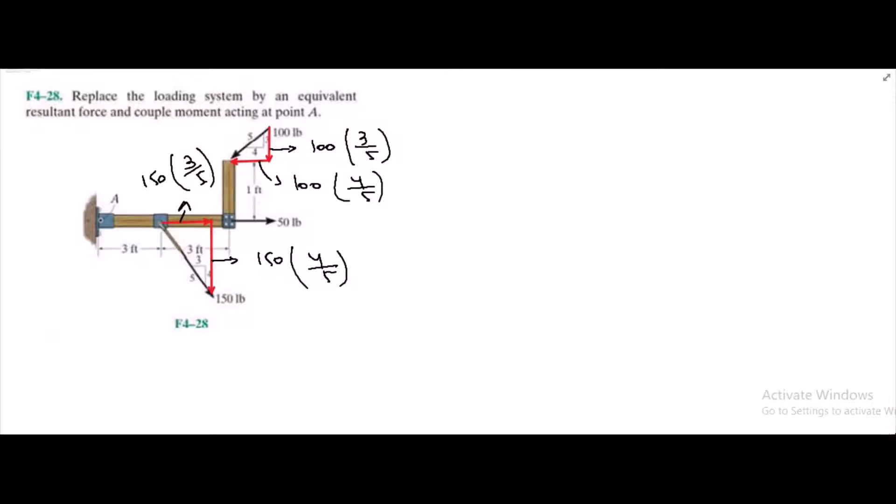For the resultant force, we have to sum up the forces in the x direction, which are equal to, if we consider right-hand side as positive, then we have negative 100 times 4 over 5, positive 50, and positive 150 times 3 over 5. From here, Fx equals 60 lb.